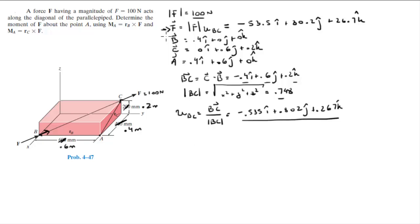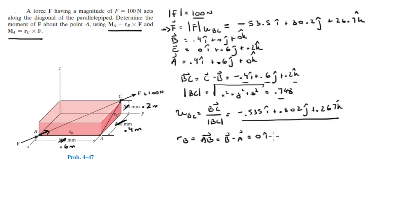Now that we have the Cartesian vector form of F, the first formula is Rb cross F and the second is Rc cross F. Rb is the vector from A to B, given by B minus A, which comes out to be 0i − 0.6j + 0k. Rc is the vector from A to C, given by C minus A, which comes out to be −0.4i + 0j + 0.2k.